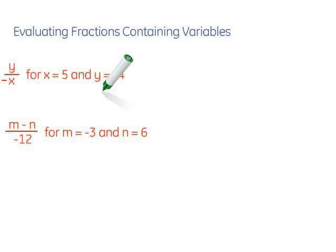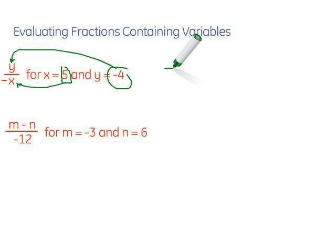So in this first one we've got our fraction y over negative x, and we're given x equals 5 and y equals negative 4. So we're going to take that 5 and put that in for x, and we're going to take that negative 4 and put that in for y. So that gives us the fraction negative 4 over, now that's a negative x and we're putting in a 5, so it's negative 5.